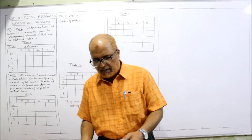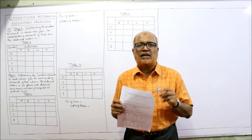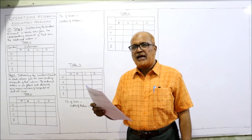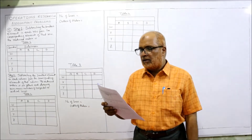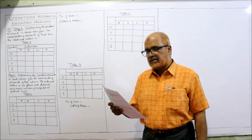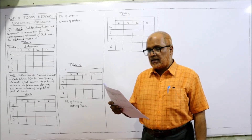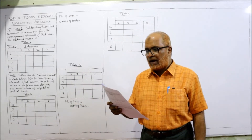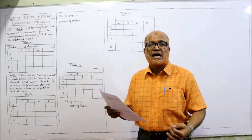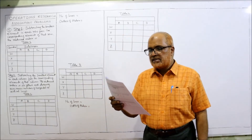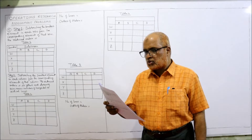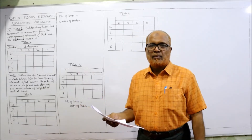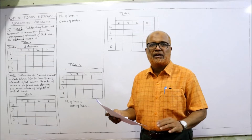Before starting the fifth problem, I expect my viewers to have a printout of the problems given in the link under my description. Fifth problem: In a textile sales emporium, four salesmen A, B, C, D, E are available to four counters W, X, Y, Z. Each salesman can handle any counter. The service time in hours of each counter when manned by each salesman is given below. Our objective is to minimize the time. Each salesman must handle only one counter. This is a minimization problem.